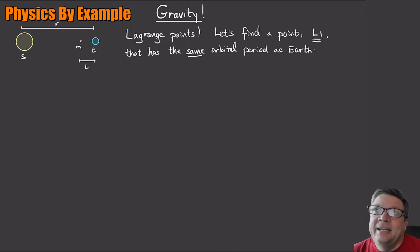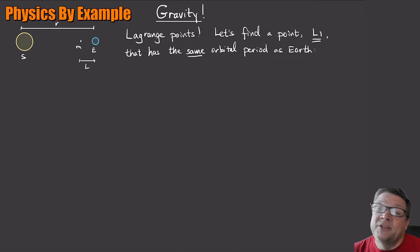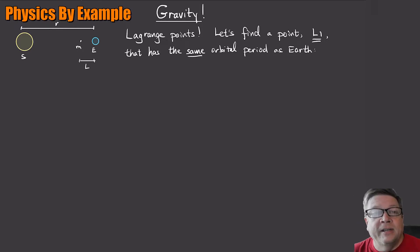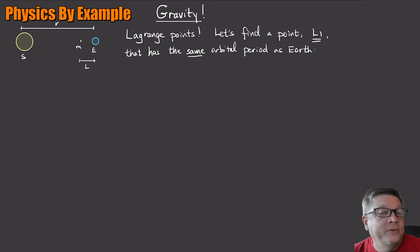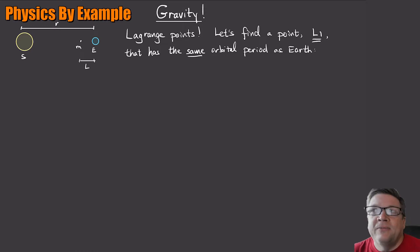What we're saying is that the combined gravitational pull on this thing — from the Sun on one side and the Earth on the other — is going to result in a stable point at which it would stay put. That would be a useful place to put satellites, for example, because they would always stay in the same place. Let's see if we can find where this point might be.